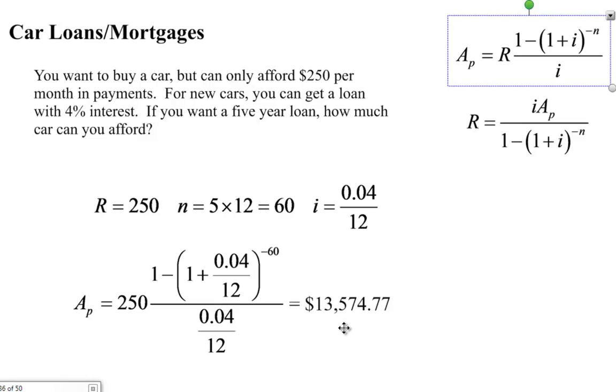So if you were to put down, say, a $1,500 down payment, you could buy a $15,000 car and take a loan out on the remaining $13,574.